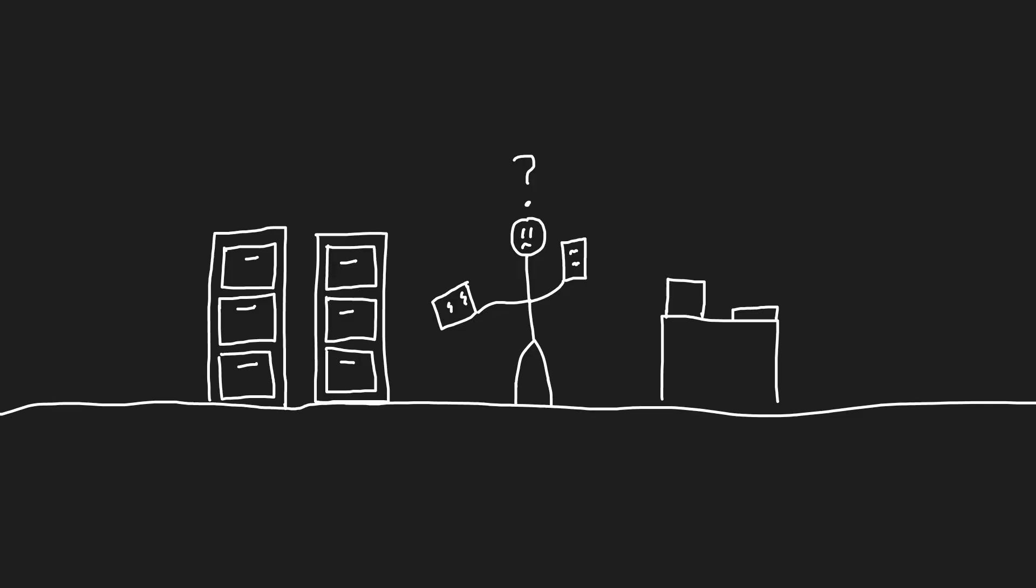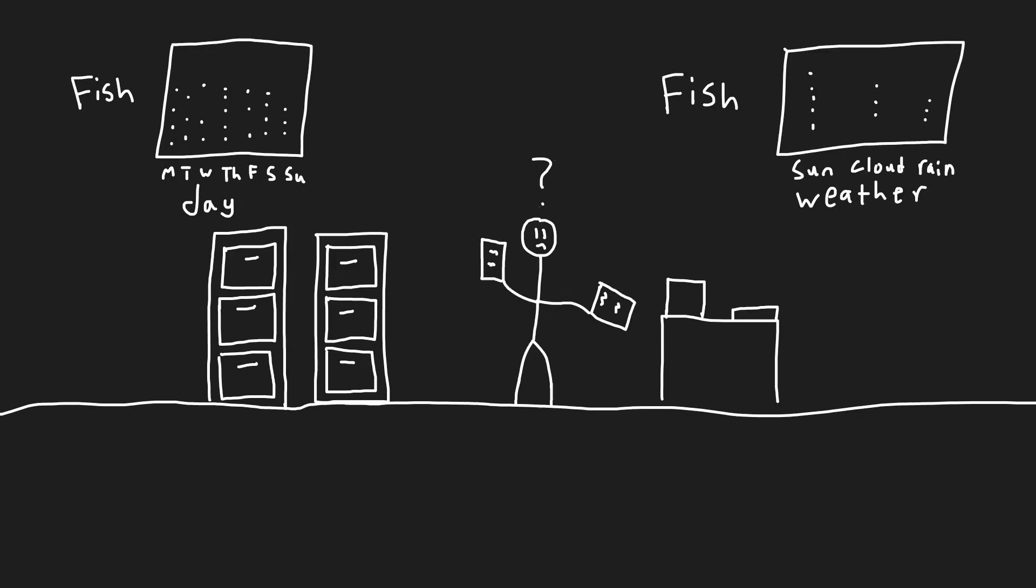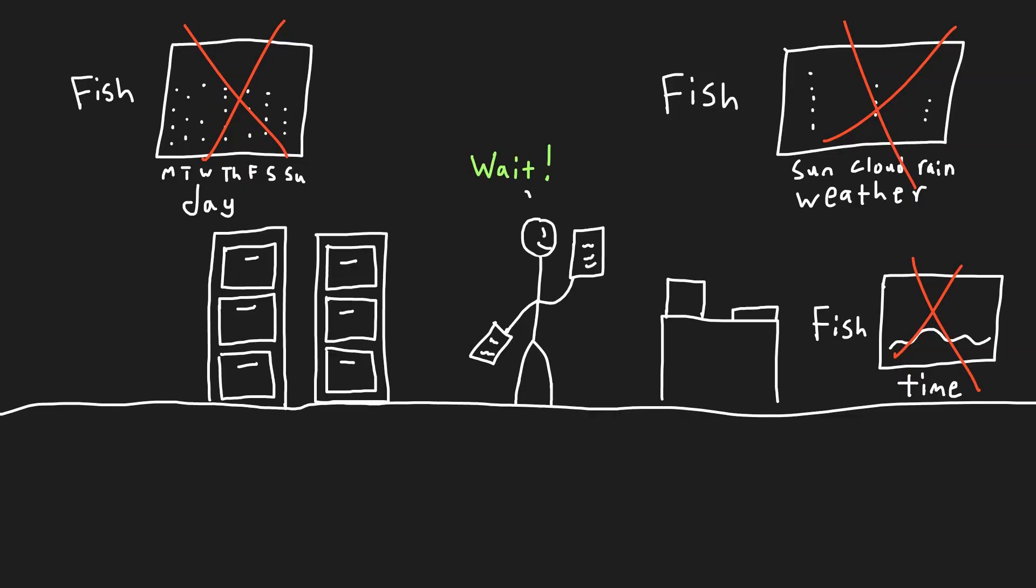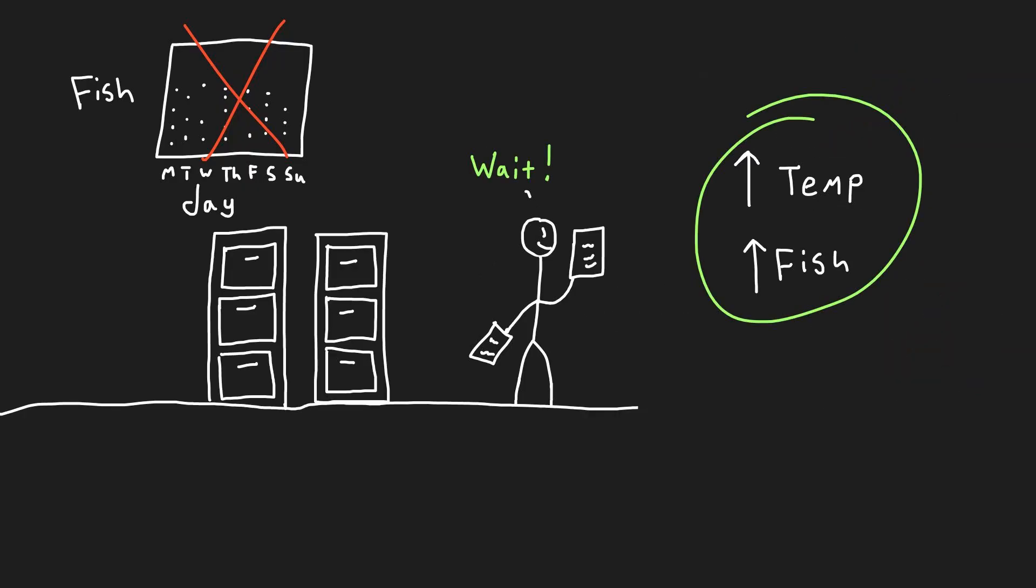You started doing a deep dive into that data, seeing if there were any insights you could gain. You started plotting fish caught by time of day, weather, and even how long he was out for. Through all of your analyses, nothing showed any sort of relationship until you stumbled upon a revelation. The hotter the day, the more fish he seemed to catch.